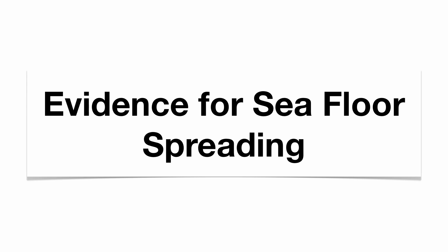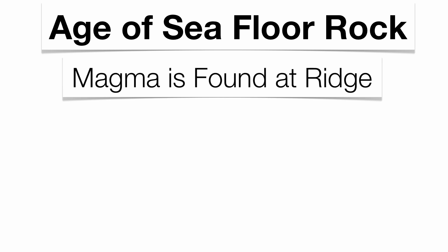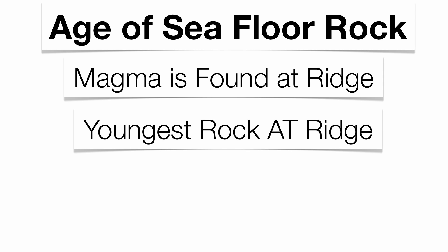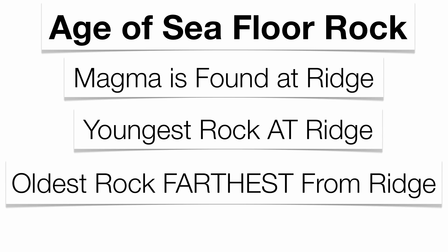Scientists had to come up with a couple pieces of evidence to support seafloor spreading. The first one is the age of the seafloor rock. Because magma is found right at the ridge — that's where the crack in the ground is — that's the location where your youngest rock is going to be found. Brand new rock is found right at the rift, and as you get farther and farther away from the ridge, it tends to get older and older. So it's very important to know the age of rock in relation to the ridge.